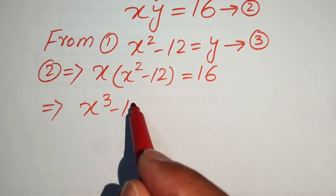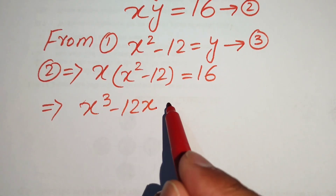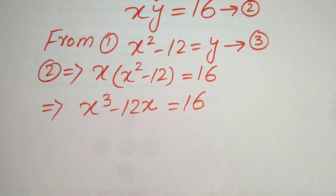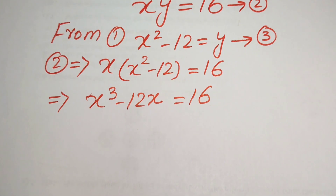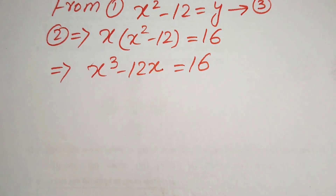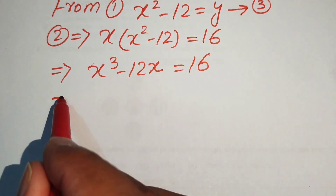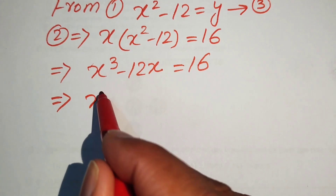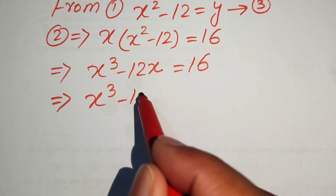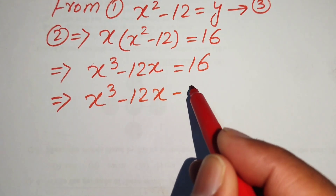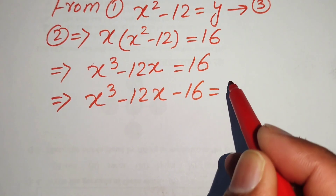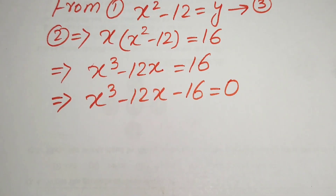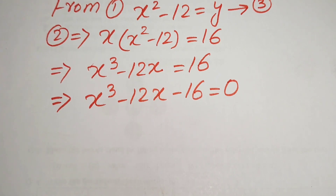Expanding gives x cubed minus 12x equals 16. Writing this in standard form by moving 16 to the left-hand side: x cubed minus 12x minus 16 equals 0. This is now a cubic equation in x.